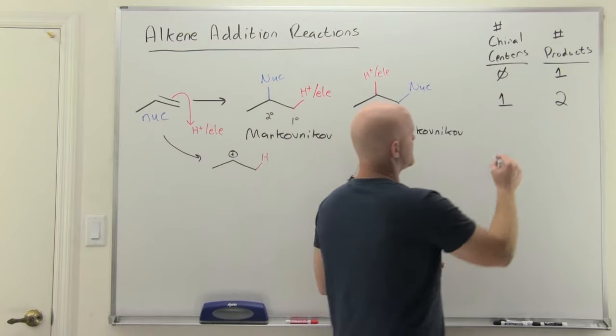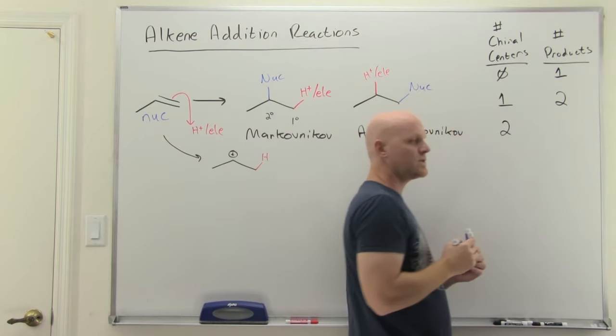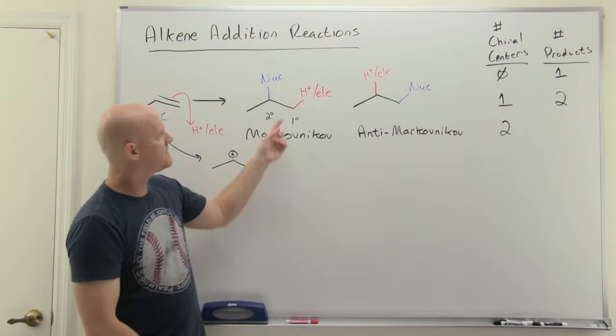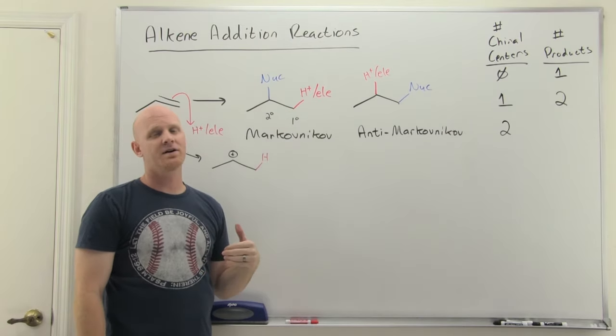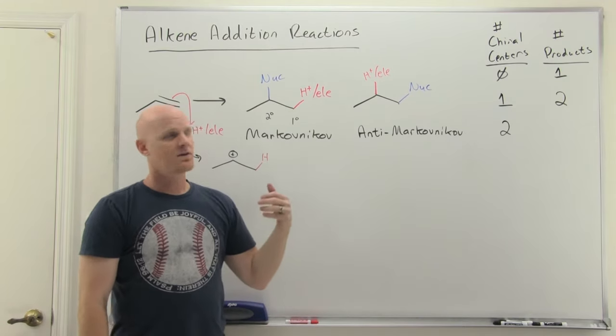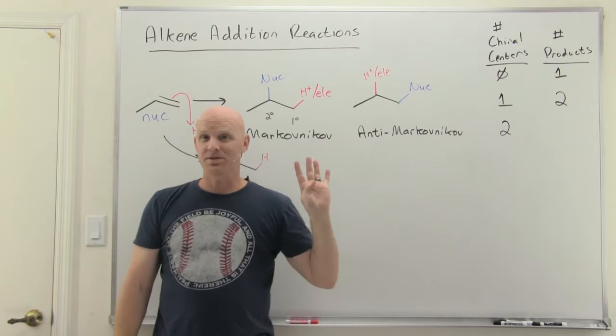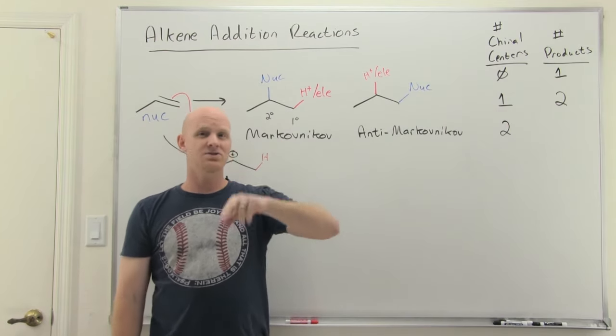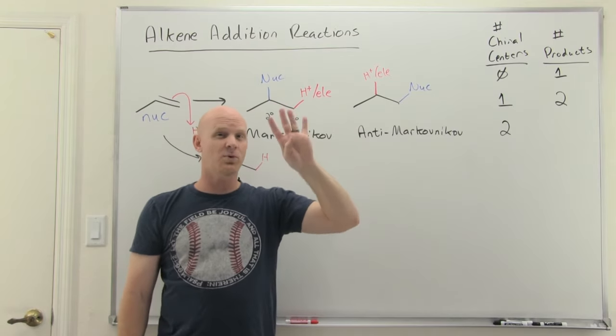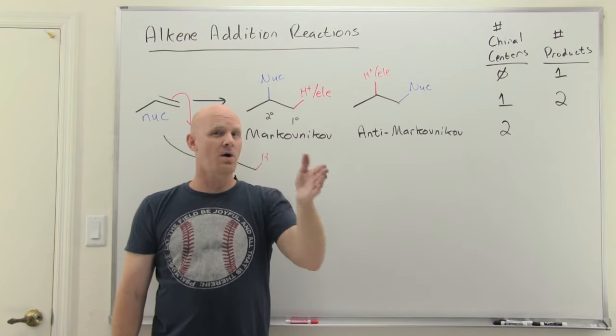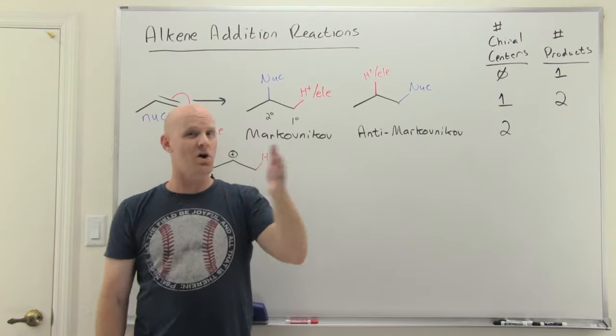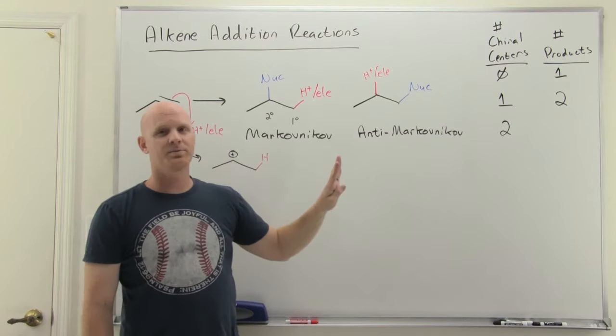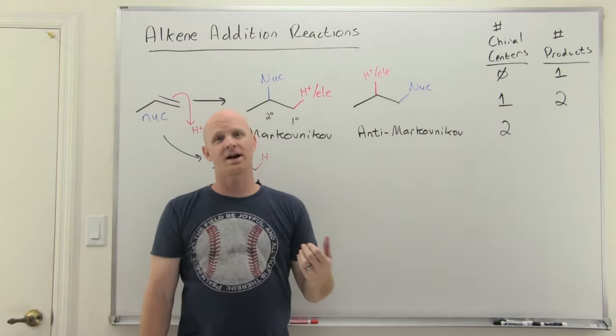What it gets tricky, though, is if you form two new chiral centers. If where you add the electrophile and the nucleophile, if both of those turn into chiral centers, we have a problem. And the problem is that now you have a chance of getting up to as many as four stereoisomers. So with two chiral centers, two to the N, where two to the two power is four different stereoisomers, it could be R, R, S, S, R, S, or S, R.